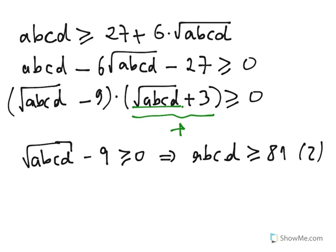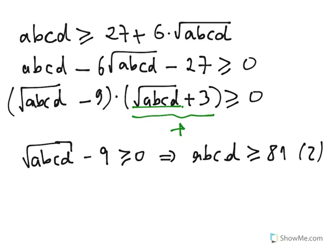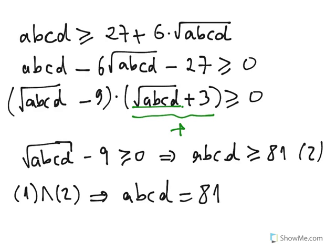Now let's look at inequality (1): ABCD is less than or equal to 81. And inequality (2): ABCD is greater than or equal to 81. So combining (1) and (2), we get that ABCD is equal to 81.